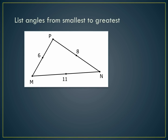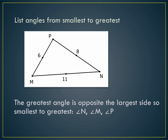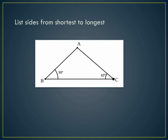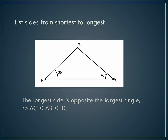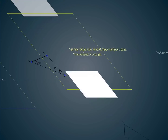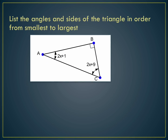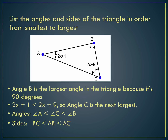Here's a problem: list all the angles from smallest to greatest. Here's the answer. Here's another problem: list the sides from shortest to longest. Here's the answer. And one more: list the angles in the triangle in order from smallest to largest. Here's the answer.